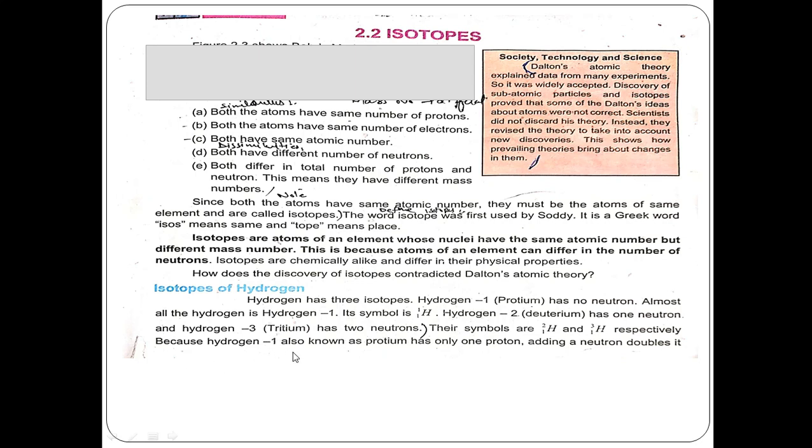Hydrogen-1 is known as protium with 1 proton. Adding one neutron gives deuterium, which has double the mass of protium.